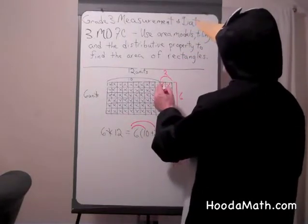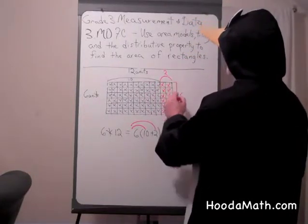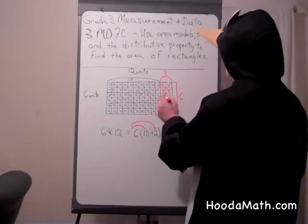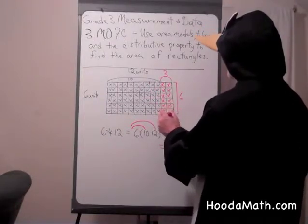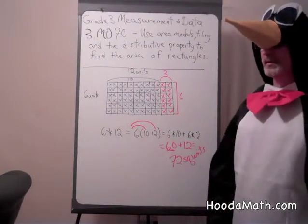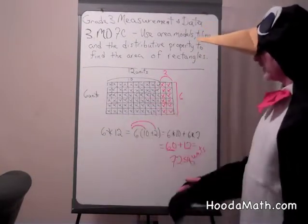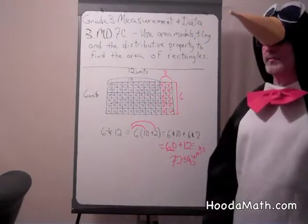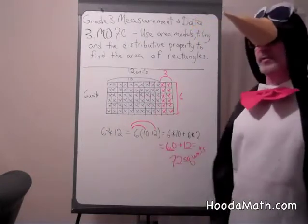And here we have groups of 2, six groups of 2. 2, 4, 6, 8, 10, 12. 60 plus 12 is 72 units. So we use tiling and the distributive property to find the area of this rectangle.